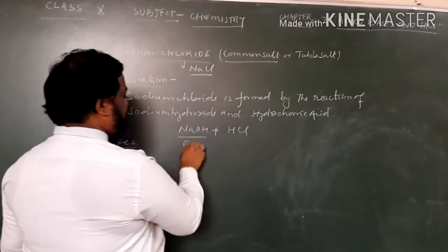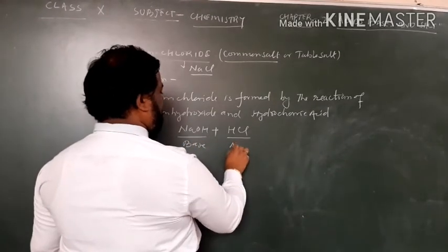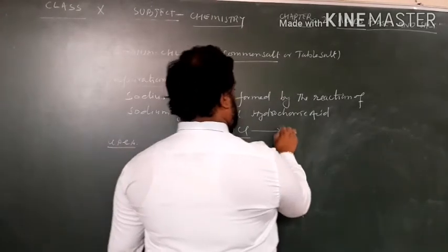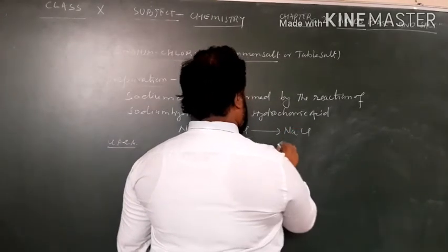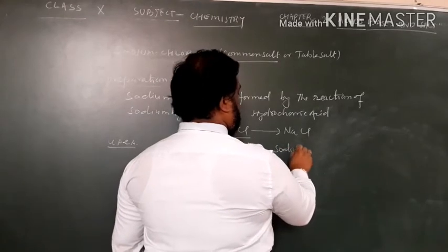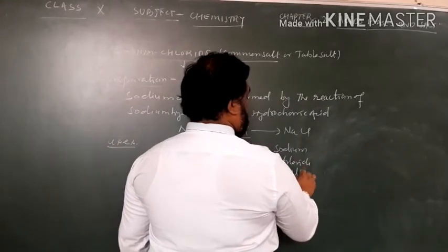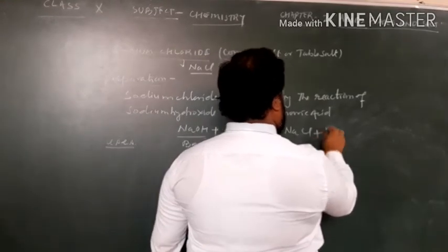One is base and another is acid to form NaCl, this is the sodium chloride salt, plus water.